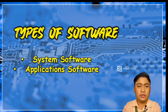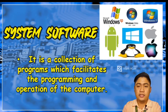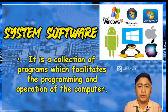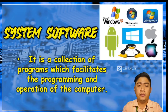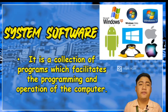Like hardware, we also have types of software: system software and application software. System software is a collection of programs which facilitates the programming and operation of the computer. It is an integral part of the computer system. It supervises the operation of the central processing unit, controls the input and output functions of the computer system, and translates programming languages and provides other support.